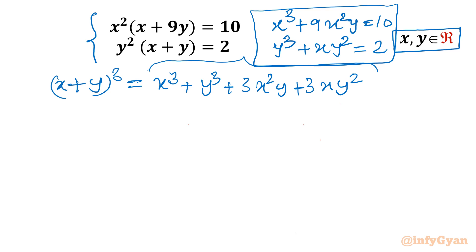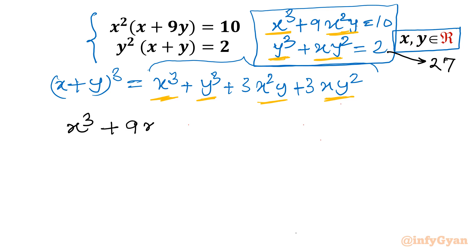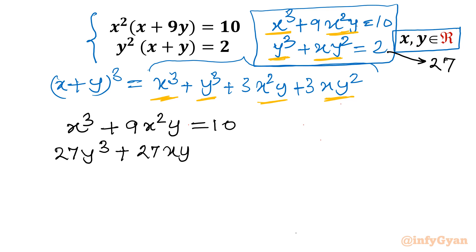Checking the terms: x³ is there, y³ is there, x²y is there with a different multiplier, and xy² is there with a different multiplier. So one algebraic manipulation we will consider — we will multiply equation 2 by something, and that something is 27. So equation 1 stays as x³ + 9x²y = 10, and multiplying equation 2 by 27 gives 27y³ + 27xy² = 54.